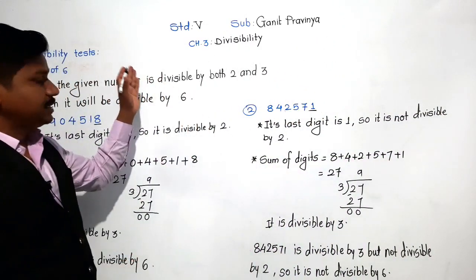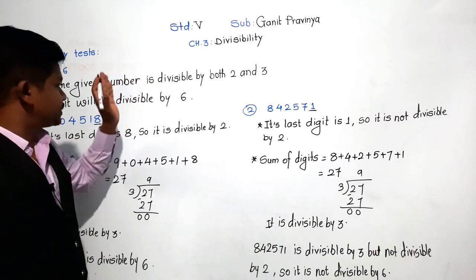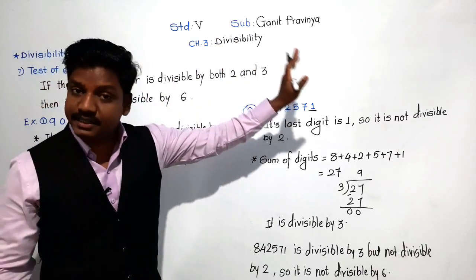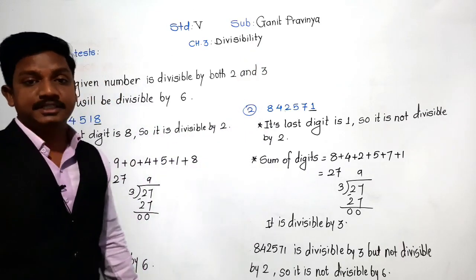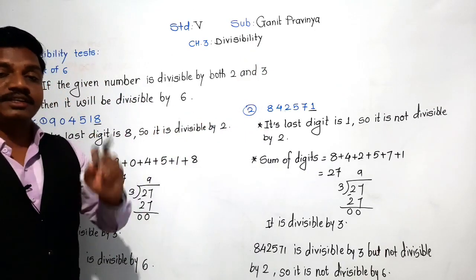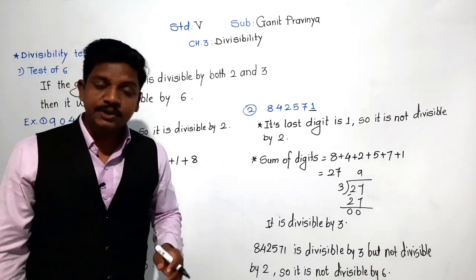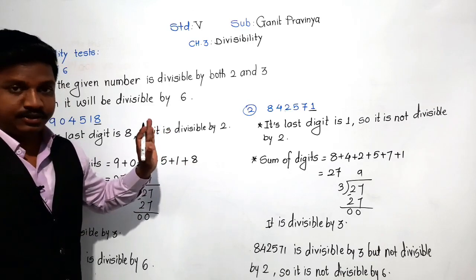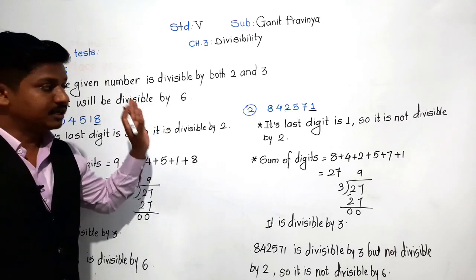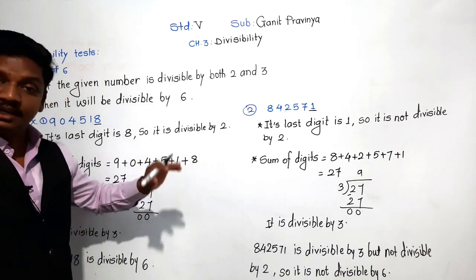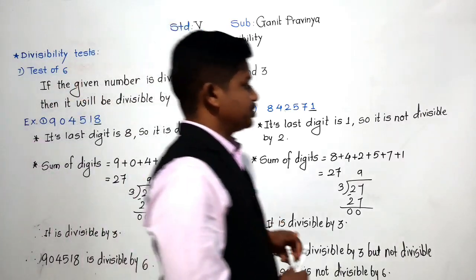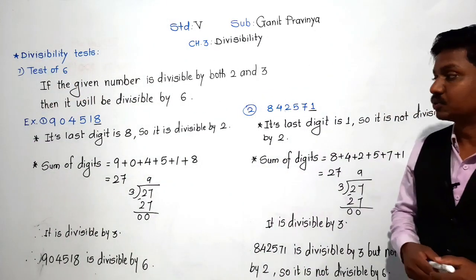As we have seen in the divisibility test of 6, the number must be divisible by both 2 and 3. Then only it will be divisible by 6. Whenever the question asks you to check divisibility by 6, apply test of 2 and test of 3. If divisible by both, then it is divisible by 6. Now pause the video and write this in your notebook.